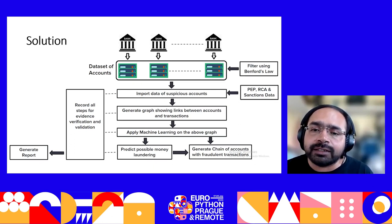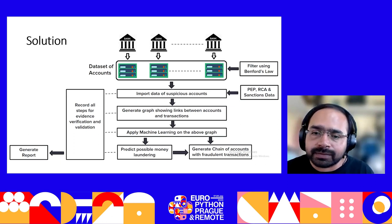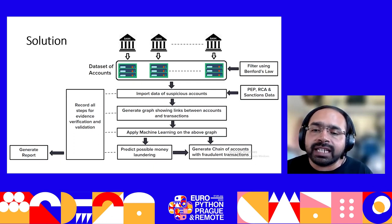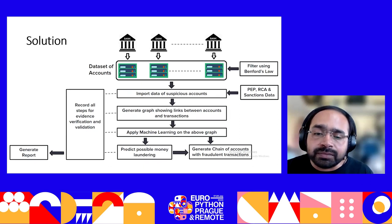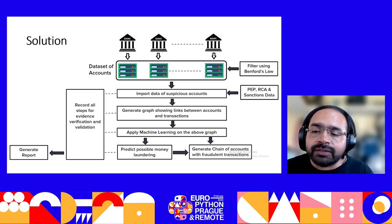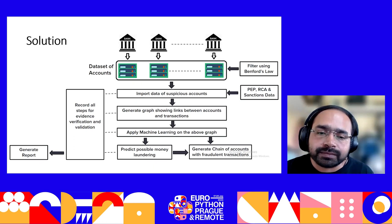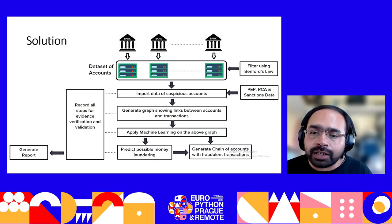Bank statements will be in different formats since each bank has its own format, so getting them to a uniform format is a challenge. Once done, you also need to import PEP, RCA, and sanctions data. Then generate a graph showing links between accounts and transactions, and apply machine learning on this graph to try to predict possible money laundering. You also need to generate a visualization showing the chain of accounts with fraudulent transactions. Since it is forensic software, every step should be recorded for verification and validation, so that if an opposing lawyer challenges the evidence, they can follow the same steps and get the same results.